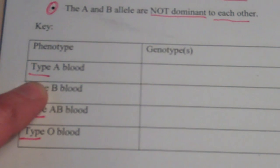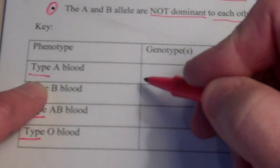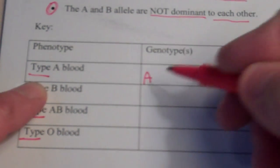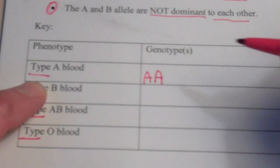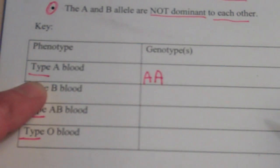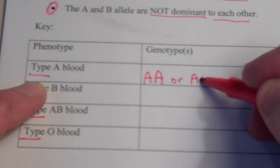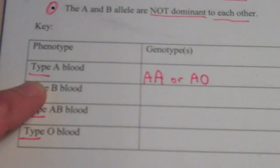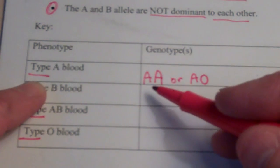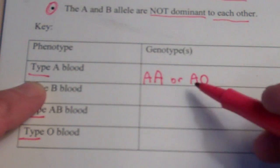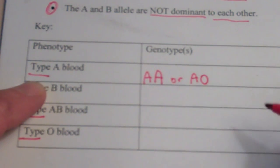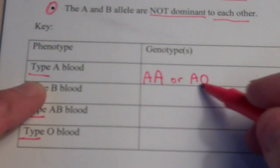Alright, now if you're type A blood, you could have gotten an A allele from one parent and another A allele from your other parent. Or, you could have gotten an A from one parent and an O from your other parent. Both of these will give you type A blood. The O is recessive to A, so this is a type A genotype.